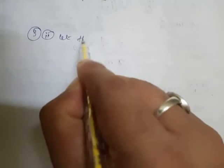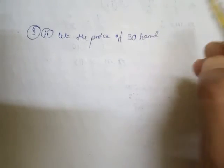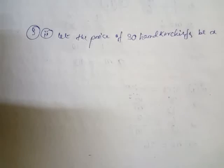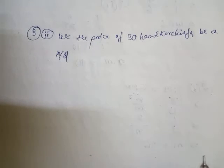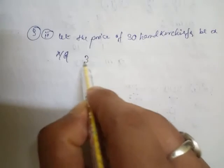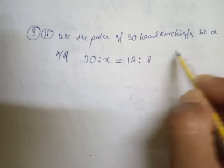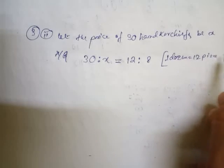Now, Question Number 3, Roman 2. Let the price of 30 handkerchiefs be x. According to the question, we apply the concept of proportion: 30 is to x equal to 12 is to 8. Note that one dozen equals 12 pieces.